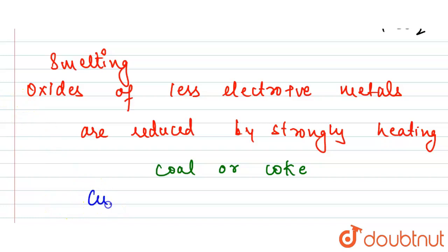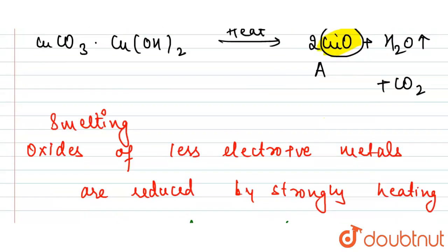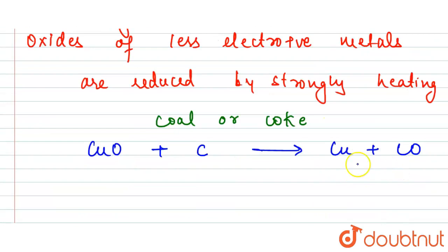So here we have CuO plus C, and then we have the formation of Cu plus CO. Here we have copper and carbon monoxide.